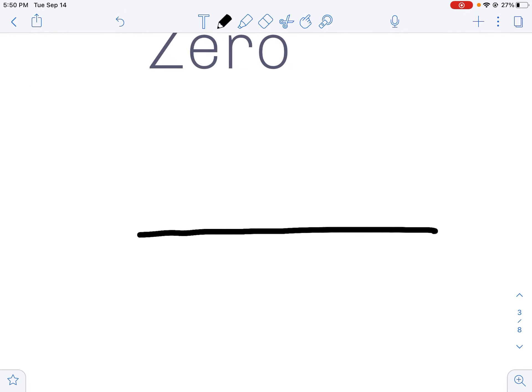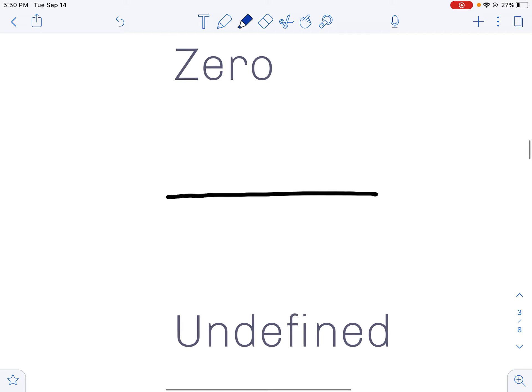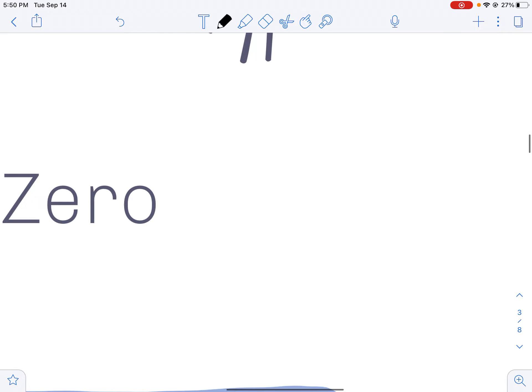Zero slope goes straight across. I always remember that because you can make the letter Z out of that. In zero slope, you're going to have a zero in your numerator and then any other number in your denominator. Zero divided by 4 is still going to be zero.